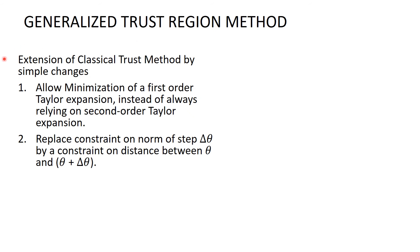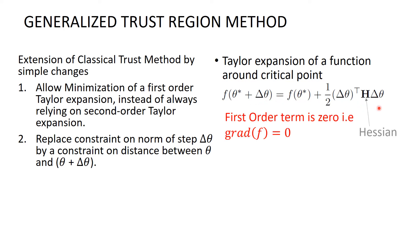Generalized trust region method. It is an extension of classical trust method. In this method, we allow minimization of first order Taylor expansion instead of always relying on second order Taylor expansion, with an extra constraint on norm of step length delta theta. The Taylor expansion of a function around a critical point is given by this expression, where first order term is 0 and H is a Hessian matrix.